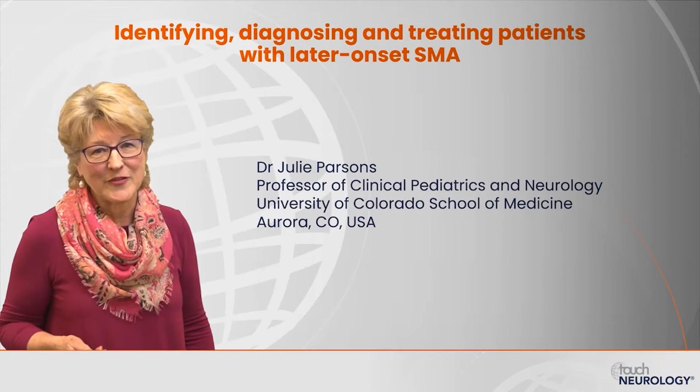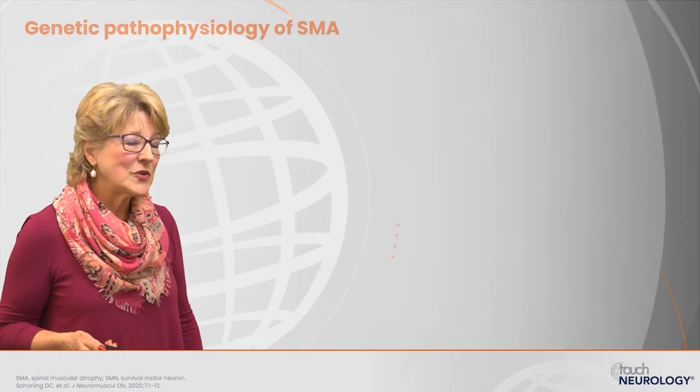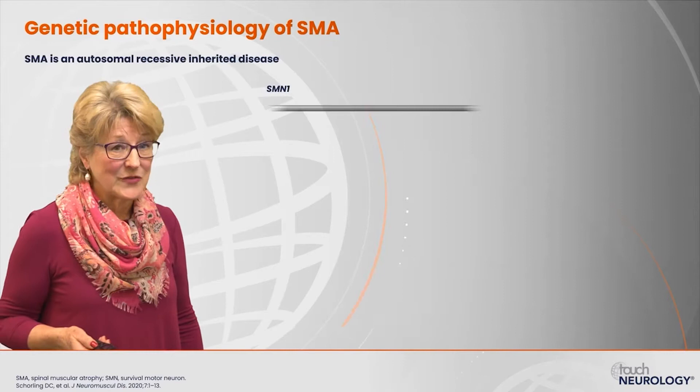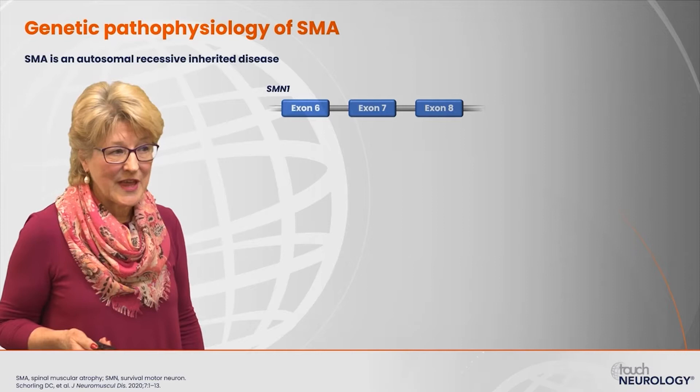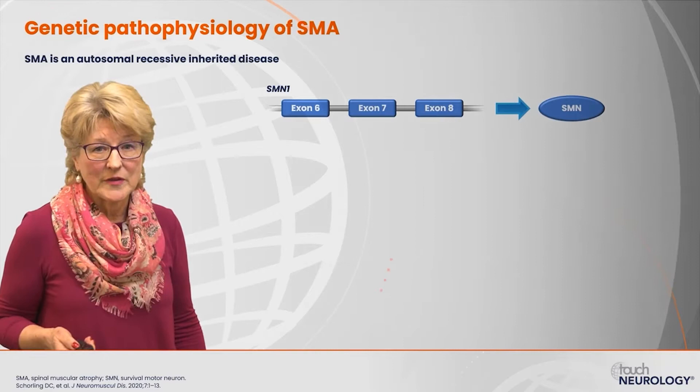We will talk about the diagnosis in older adolescent and adult populations. It's important to understand that spinal muscular atrophy is a genetic disorder. SMA is an autosomal recessive inherited disease, and it is caused from the lack of survival motor neuron, which is a protein that nurtures motor neurons.